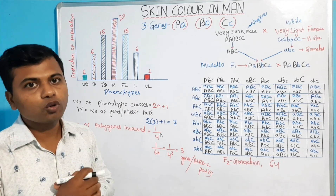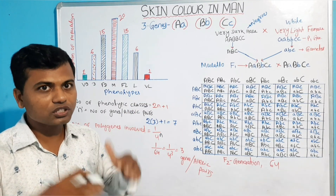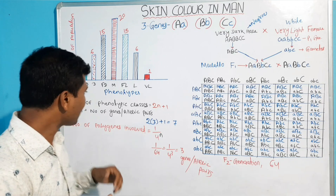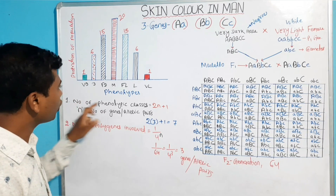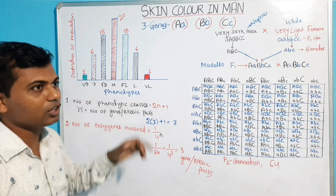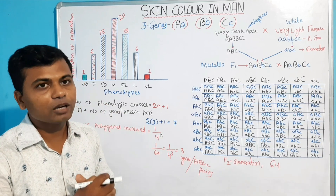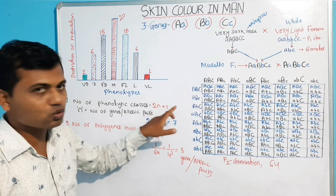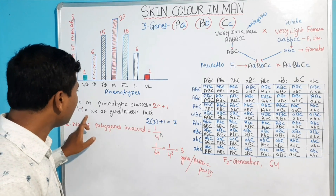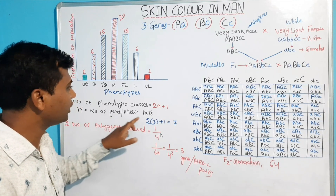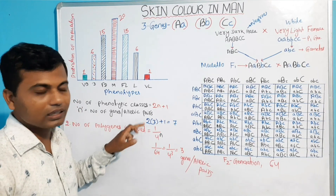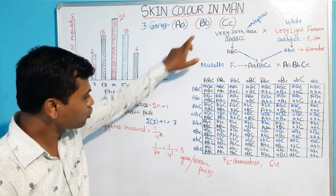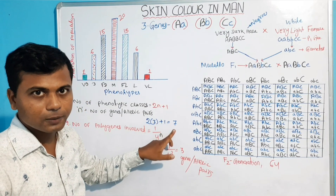Now, come to some common formulas associated with Polygenic Inheritance. First, the number of phenotype classes in Polygenic Inheritance can be calculated by the formula 2N + 1, where N is equal to the number of genes or allelic pairs. In the case of skin color, we had 3 genes or 3 allelic pairs, so we have 7 phenotypes.